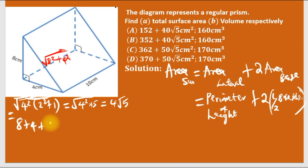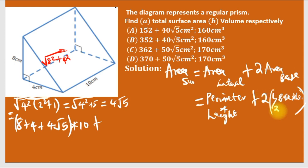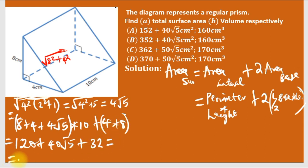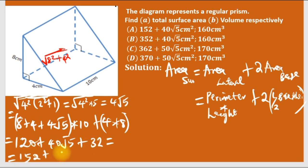So the perimeter is 8 plus 4 plus 4 root 5, times the height which is 10. Plus two times half base times height — the two and the half cancel, leaving base times height. The triangle base is 4 and height is 8. So: 8 plus 4 is 12, times 10 is 120, plus 10 times 4 root 5 is 40 root 5.